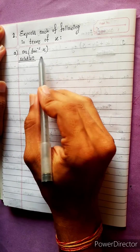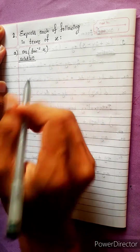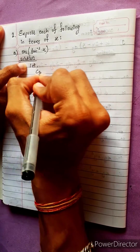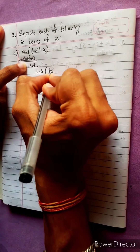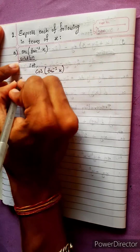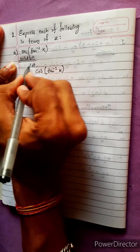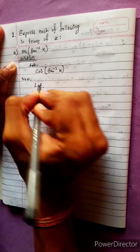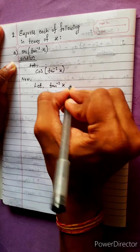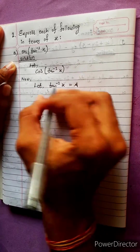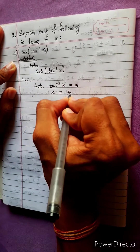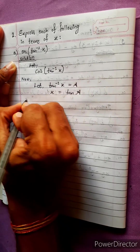Express each of the following in terms of x. Let cos tan inverse x be the question. Let tan inverse x equals to a, so x equals to tan a.